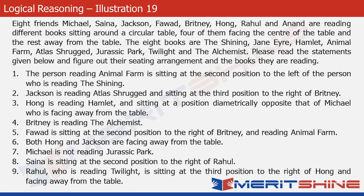This problem is about eight friends sitting around a circular table. Four of them are facing the center of the table and the rest four are facing away — meaning their backs are towards the center. The eight people are reading eight different books. We need to figure out their seating arrangement and the books they are reading using the nine statements given. My advice is to pause the video, attempt the problem, and restart once done. You can also download the soft copy from our website.